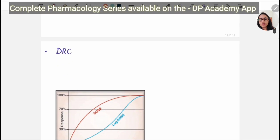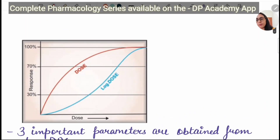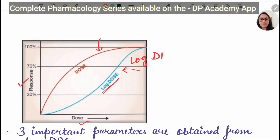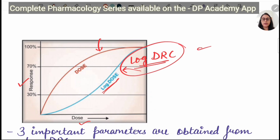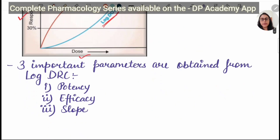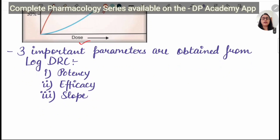Coming to dose-response curve, we have two kinds of curves. When we plot a graph, on the y-axis we take response and on the x-axis we take dose. We have two kinds of graph: one is the hyperbola graph and another is the sigmoid graph. This sigmoid graph is the log DRC (dose-response curve) graph, and this is the graph we use clinically. There are three important parameters that can be obtained from a log DRC graph.